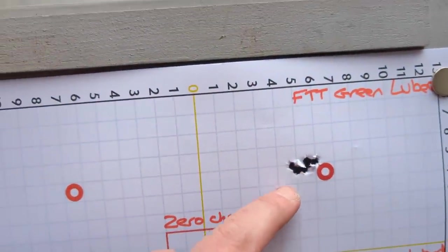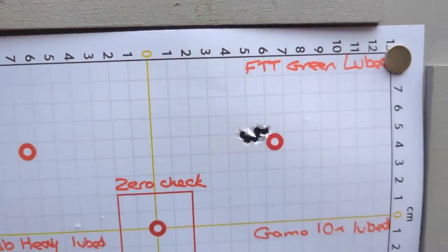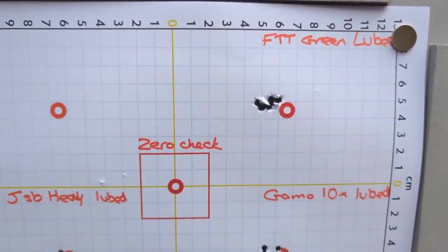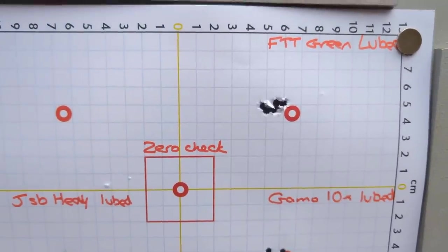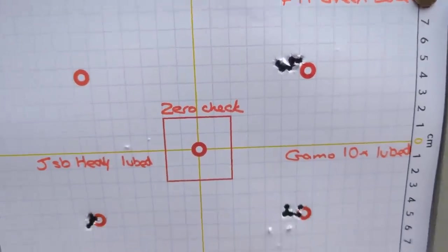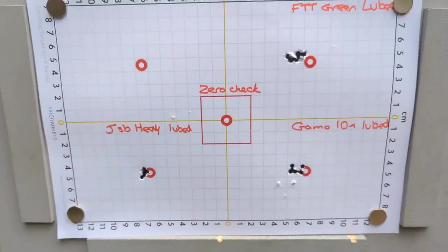Right, lubed ones. Is that any better or any worse? What's that? 15, 16 mil cross? We'll have a little look when we get home. It's quite interesting. They certainly felt a little bit smoother to shoot. So yeah, overall, not too bad. Bits to talk about. So I'll see you at home.